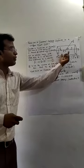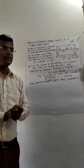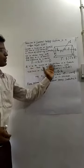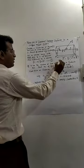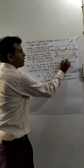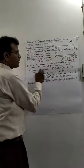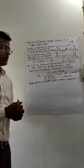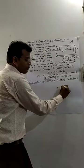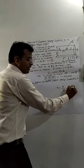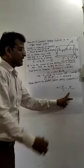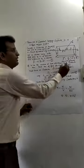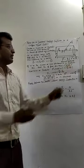A conductor does not consist of just a single electron; it consists of a large number of electrons. So first we calculate the number of electrons. If small n indicates the number density — number of electrons per unit volume in a conductor — then the total number of electrons is equal to n times the volume, which is n × A × L. This is equation number 2.